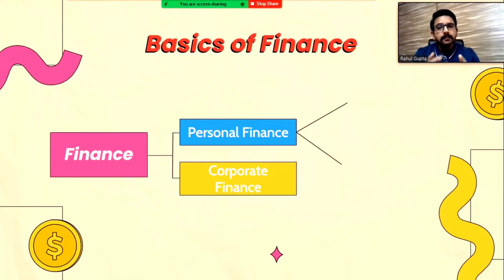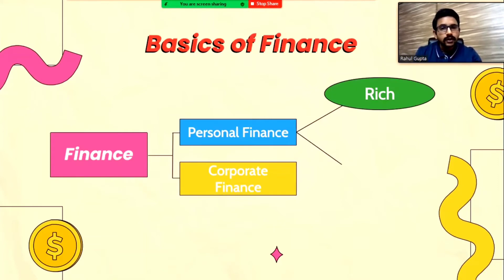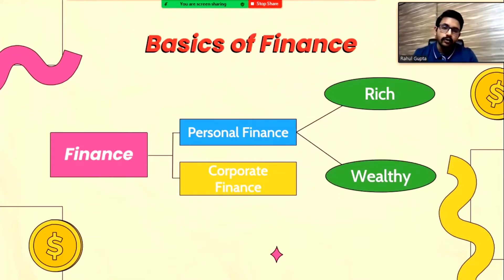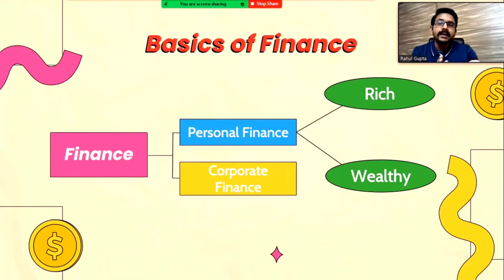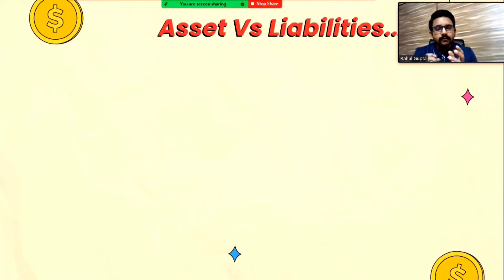In personal finance, our objective should be very clear — whether we want to become rich or whether we want to become wealthy. Wealthy people don't just spend whatever money they have; they also want to grow their wealth. In order to understand how to grow your wealth, you first need to know how much your wealth is. That wealth can be categorized into two categories: one is called an asset, and the other is called a liability.